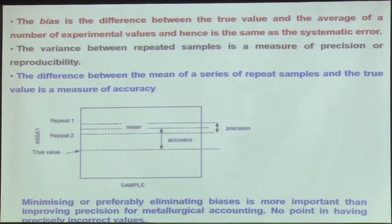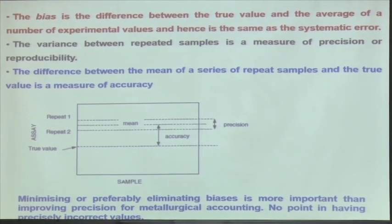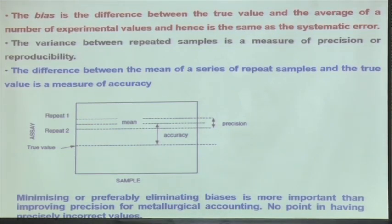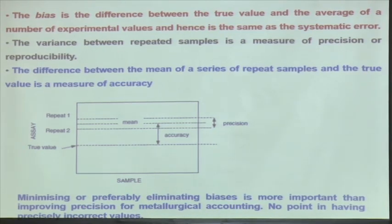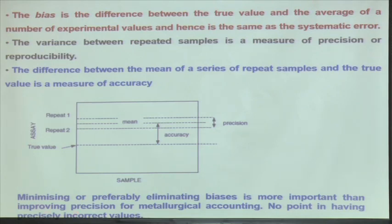The systematic error is nothing but the bias. The variance between repeated samples is a measure of precision or reproducibility. A data may be reproducible but it may not be repeatable — I request you to look at your textbooks, there are differences between reproducibility and repeatability. The difference between the mean of a series of repeat samples and the true value is a measure of accuracy.